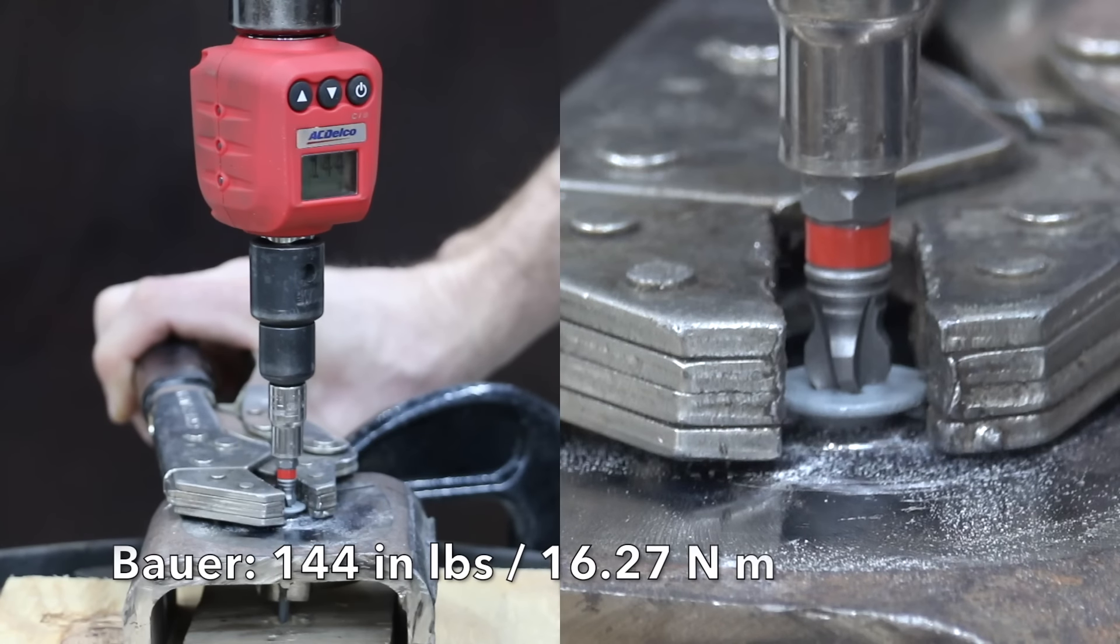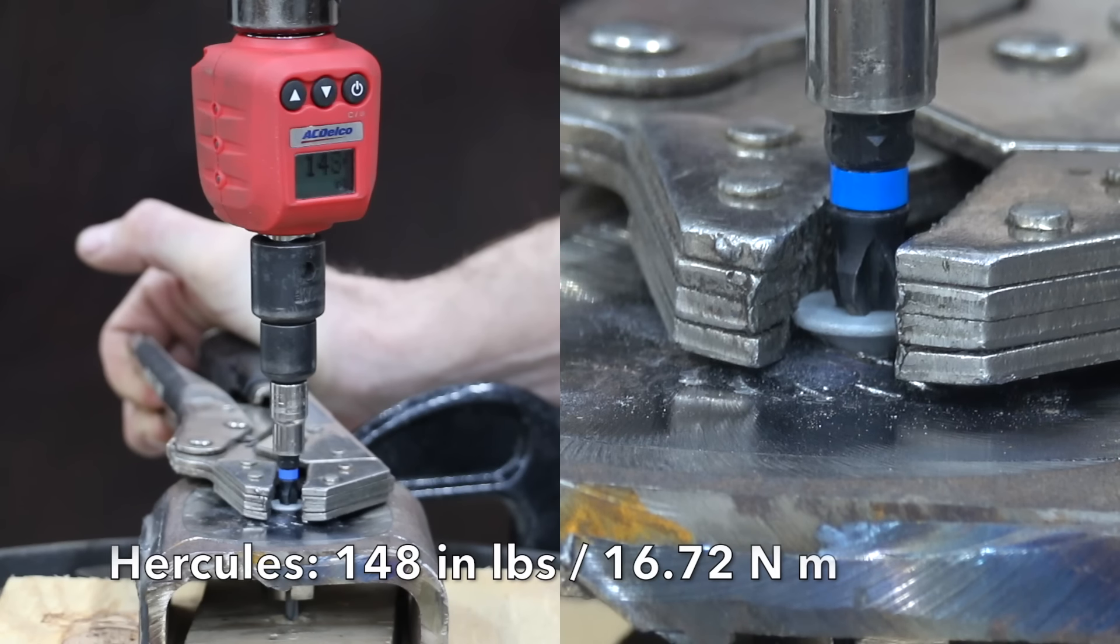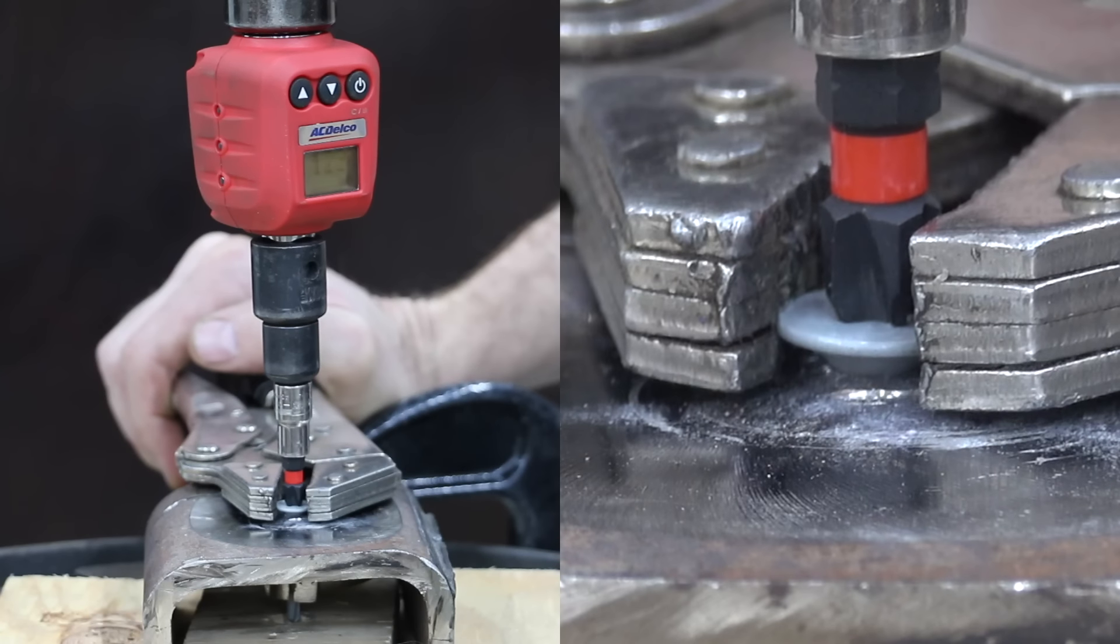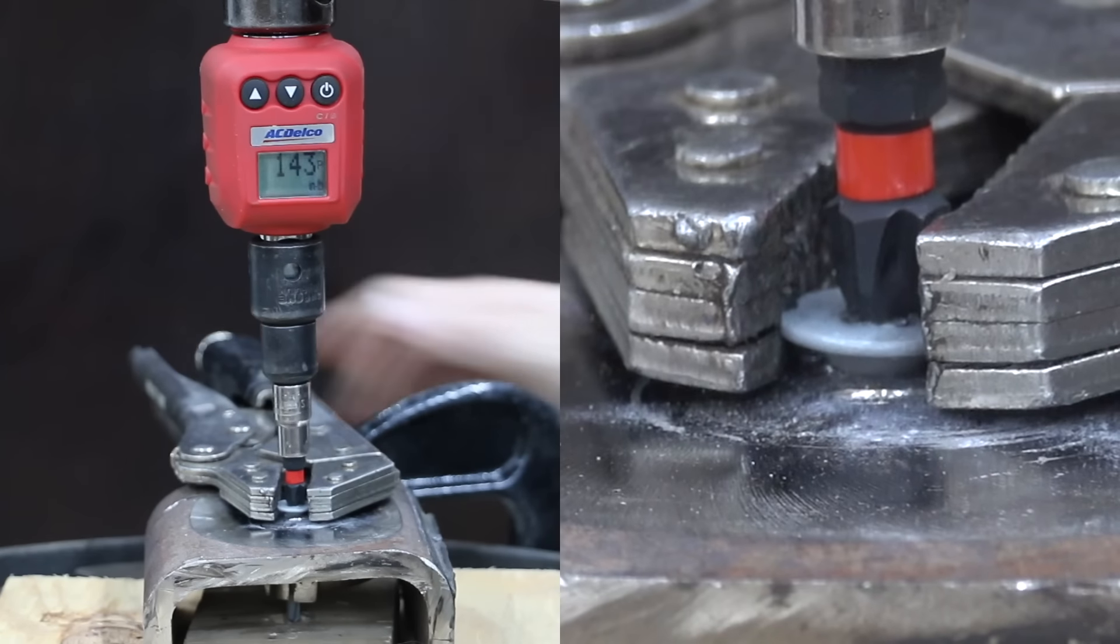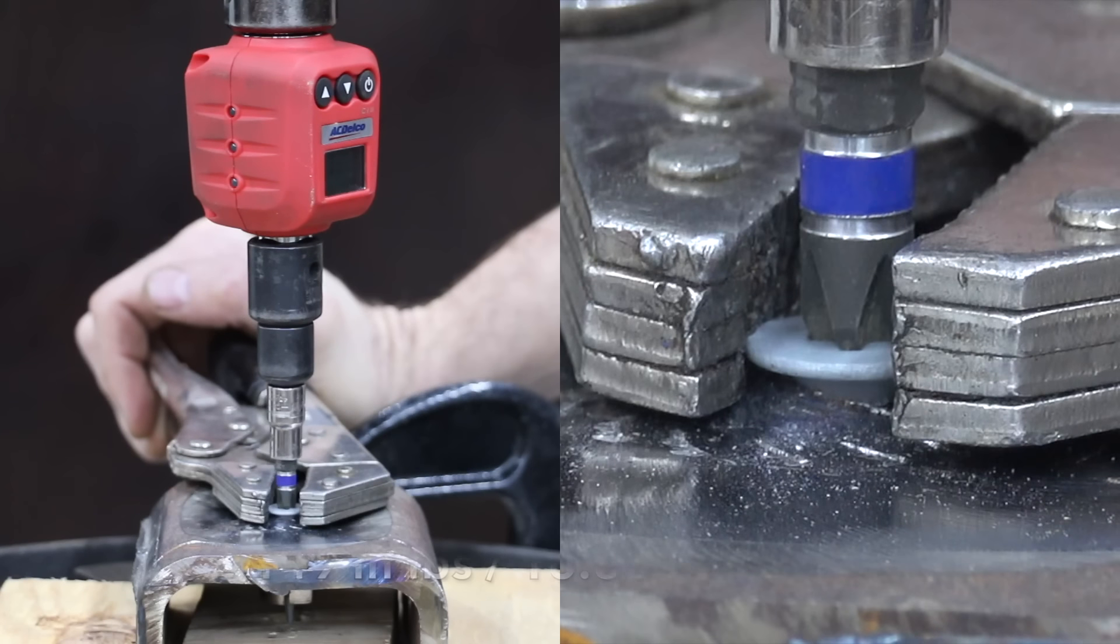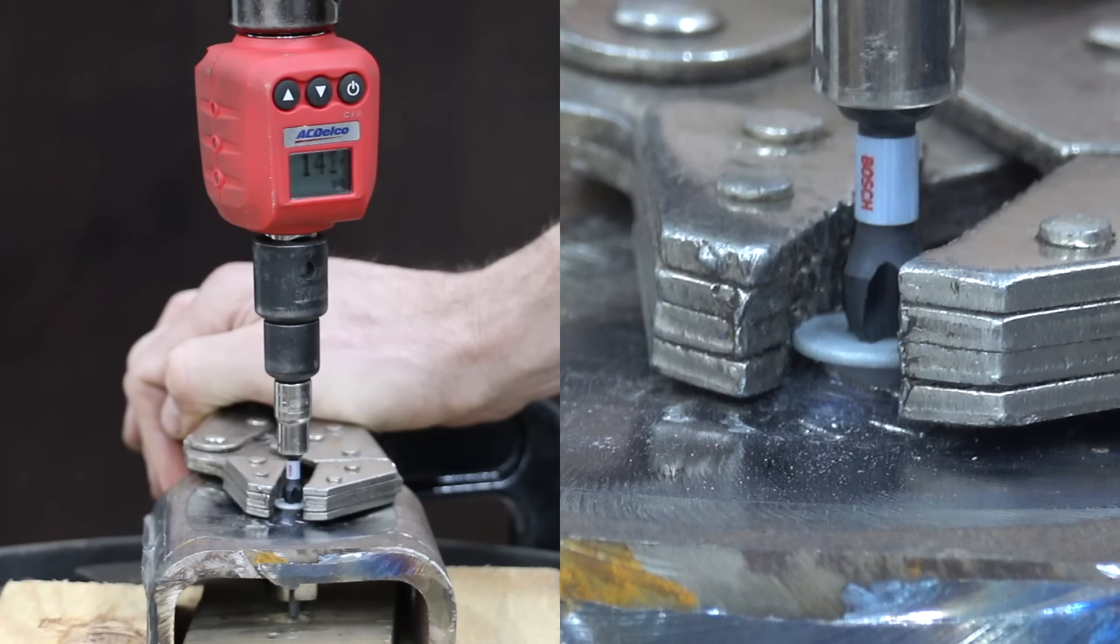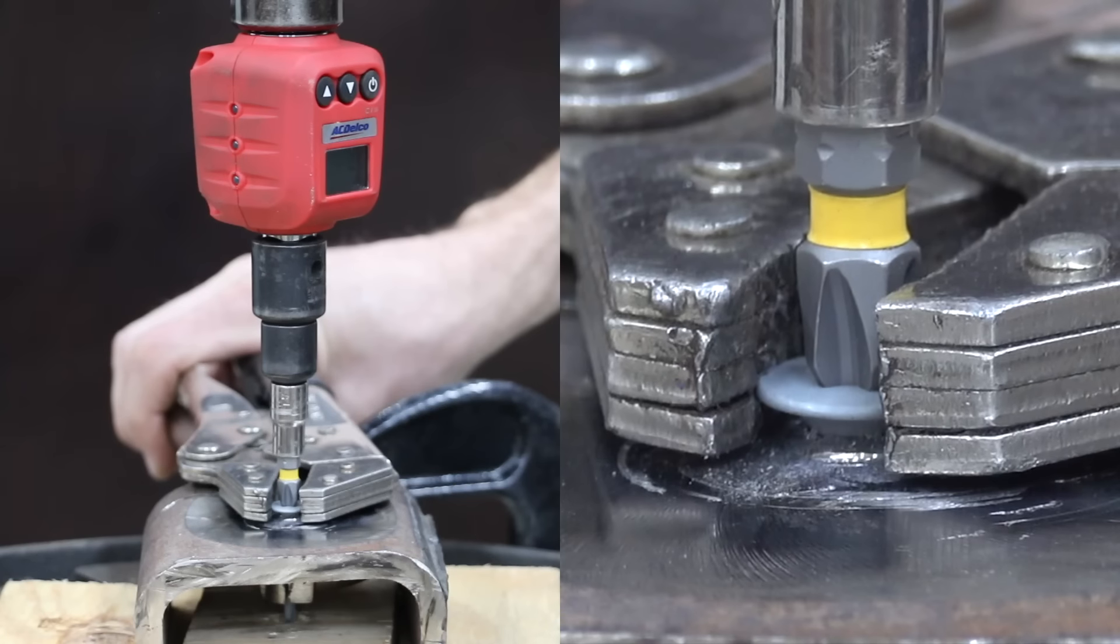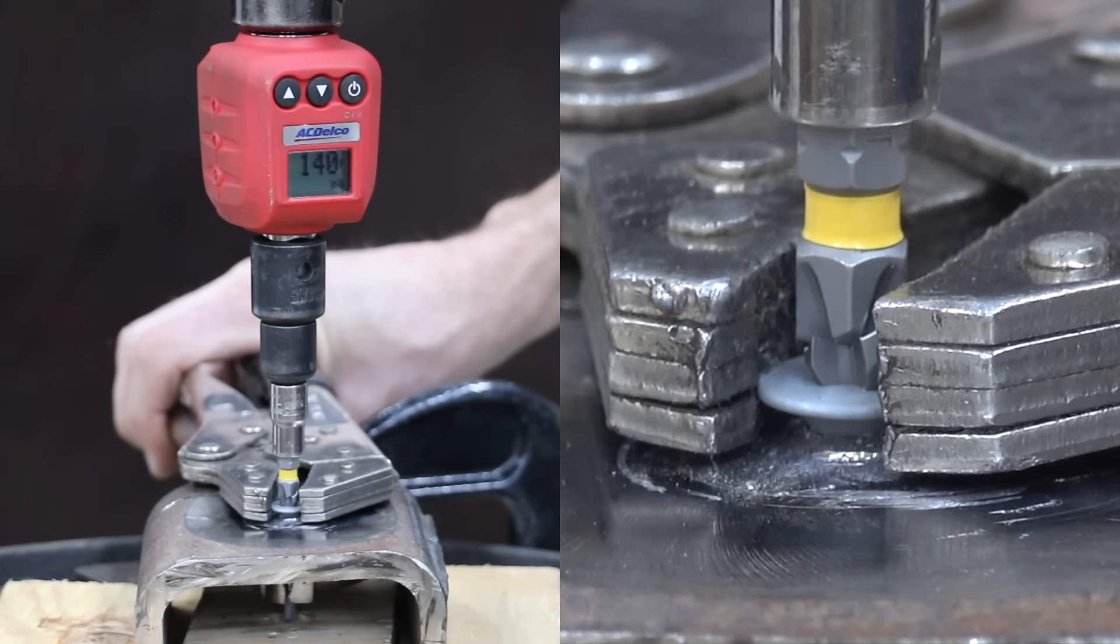The Bauer showed impressive strength snapping at 144 inch-pounds. The Hercules did slightly better at 148 inch-pounds. The Craftsman wasn't quite as strong as the Bauer or the Hercules at 143 inch-pounds. The Irwin did the best yet at 149 inch-pounds. Very impressive. The Bosch didn't do quite as well as the Irwin at 146 inch-pounds. The DeWalt snapped at 140 inch-pounds, the lowest of all the driver bits except for the Harbor Freight Warrior.